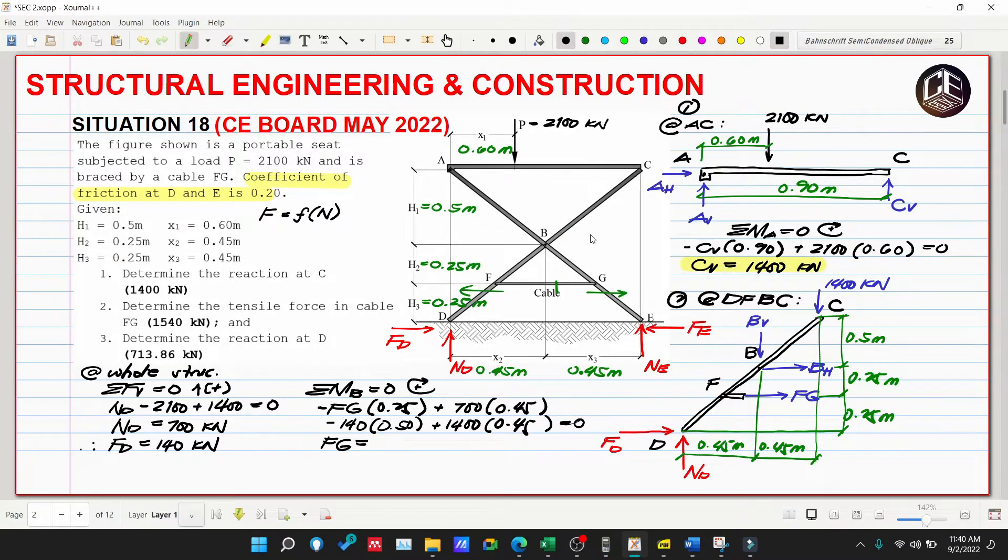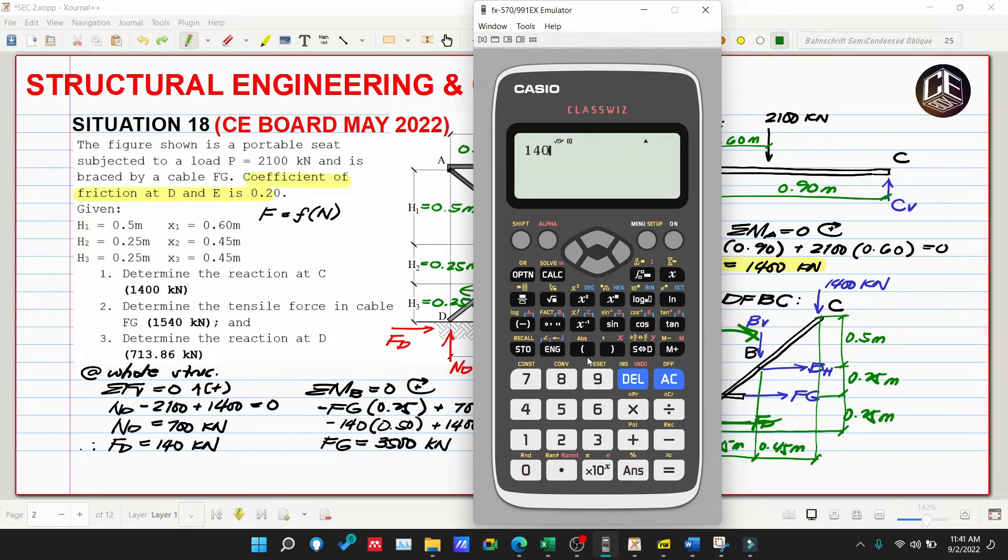So FG equals 3500 kilonewtons. However, the reference answer is 1540. If we disregard the 14 and change FD direction to the left, making it clockwise: negative FG by 0.25, plus 700 by 0.45, minus 140 by 0.5 equals zero, we get FG equals 1540.